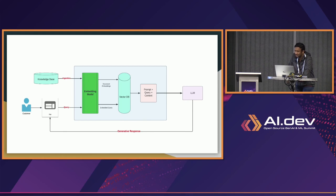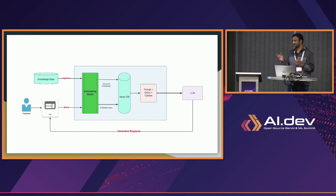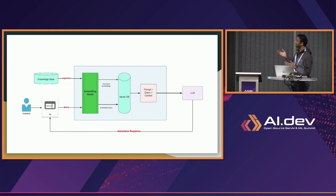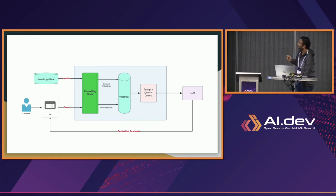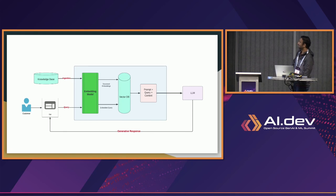Once you have these embeddings, you store them in a vector database. In a vector database, you can search based on nearest neighbors. Say a query comes in for apple — it doesn't just do a keyword search and return documents containing apple, but it will also look for the nearest ones like fruit or grape. Once you have the results from the vector database, you look at the top K results, sort them, and pass that context to your LLM. With this context and the user's query, you get a much more nuanced, grounded LLM response with cited knowledge articles — a much better response than directly asking an LLM.